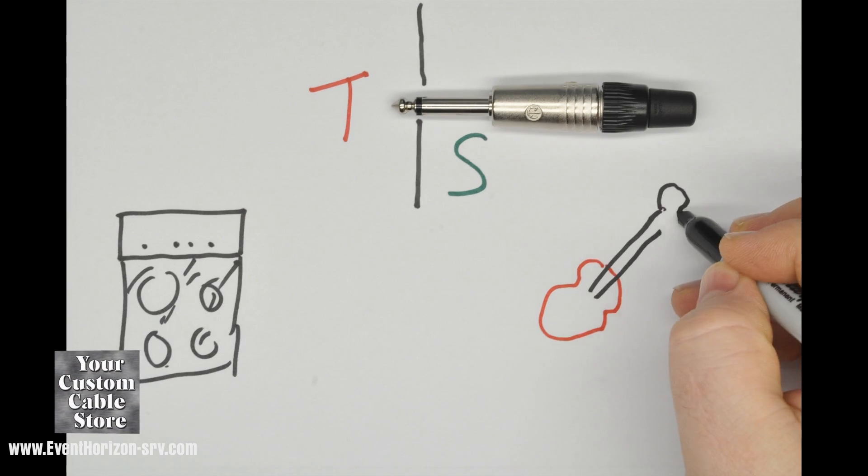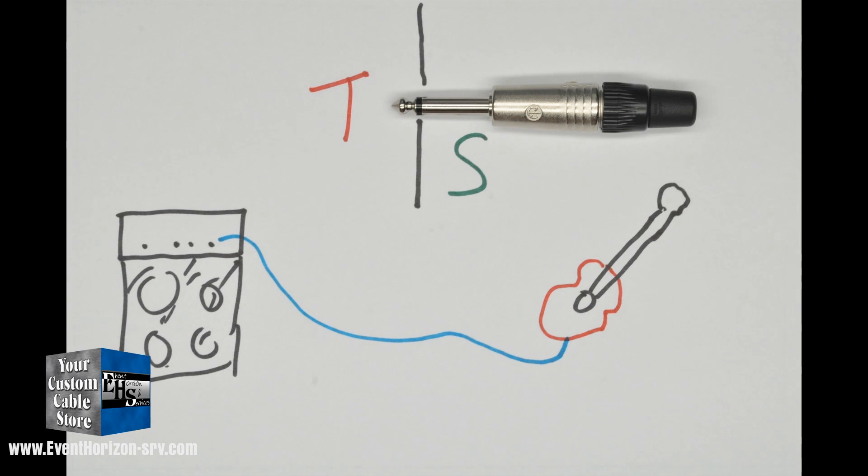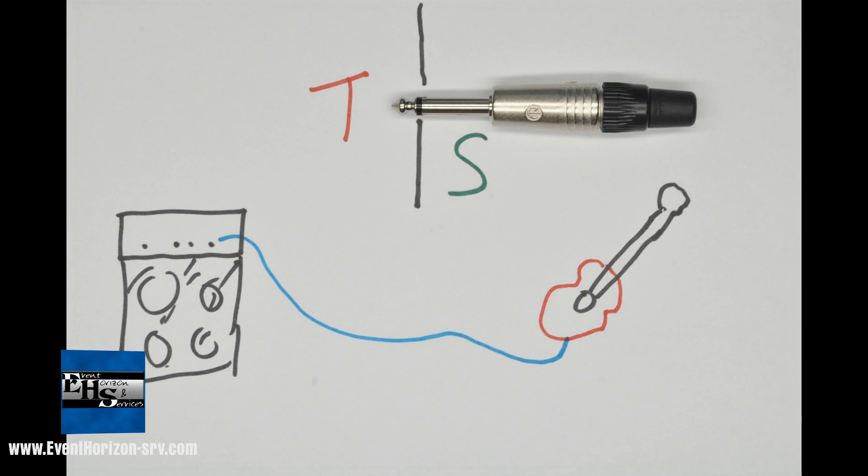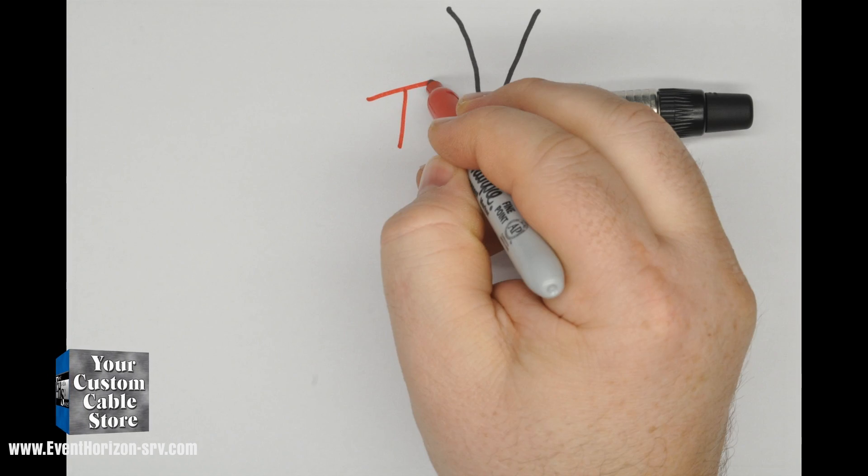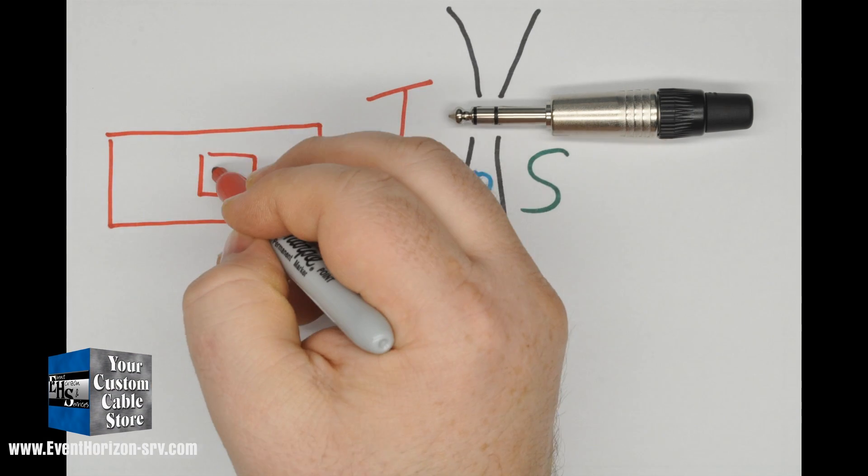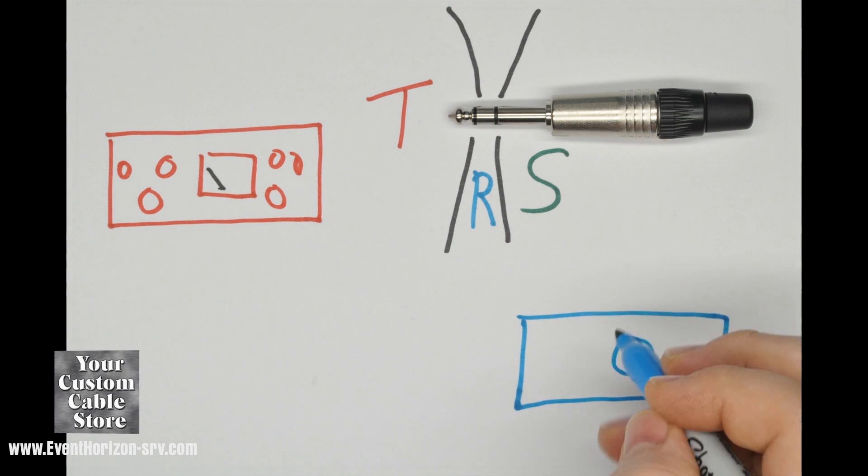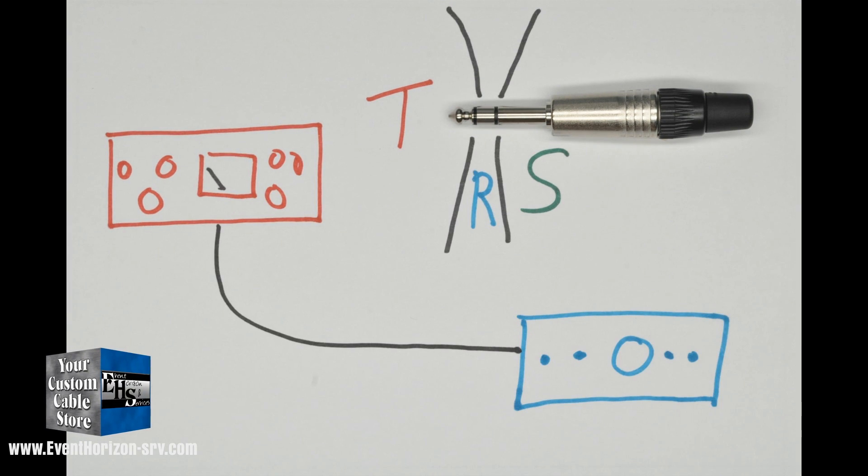The TS connector is typically used for instrument connections with an unbalanced signal. The TRS connector has three contact points: the T for tip, the R for ring, and the S for sleeve. The TRS connector is typically used for gear connections with balanced signal.